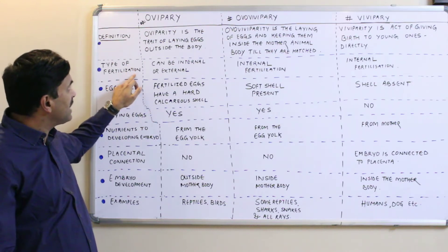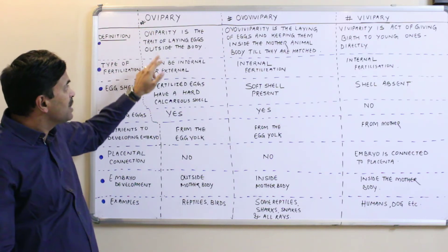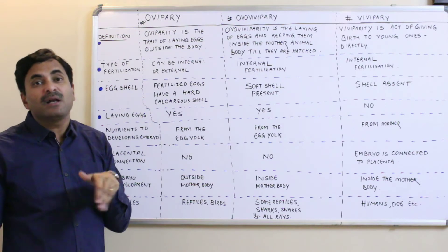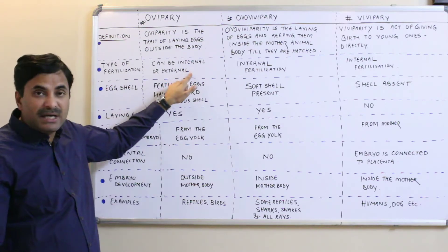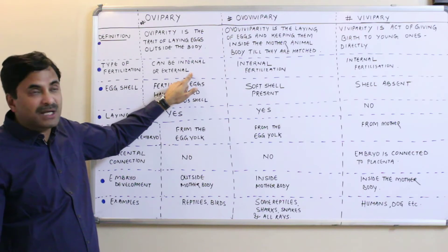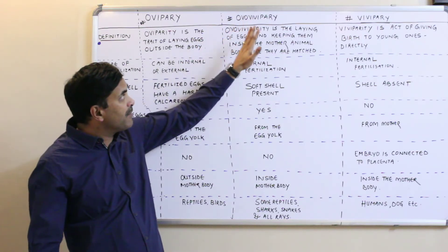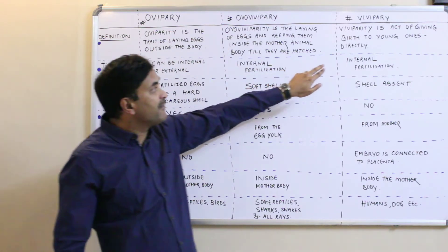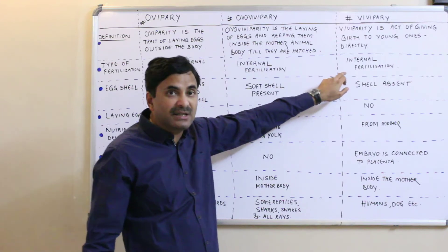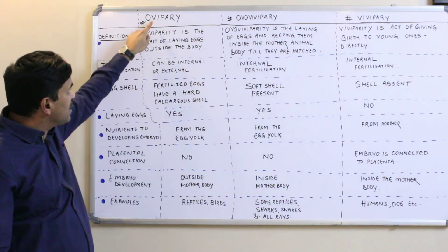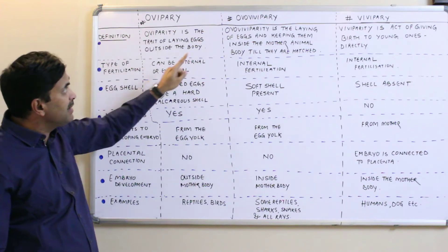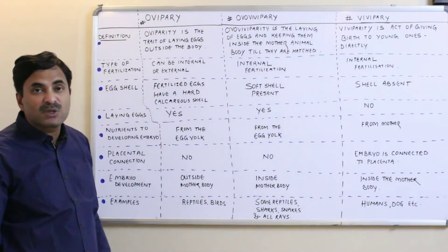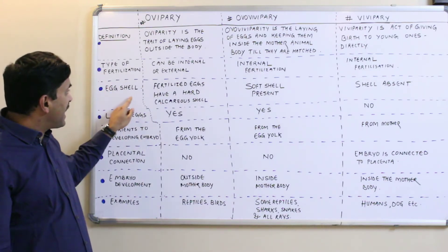Regarding type of fertilization: in oviparous organisms, fertilization can be internal or external. In ovoviviparous organisms, fertilization is always internal. In viviparous organisms, fertilization is also always internal.